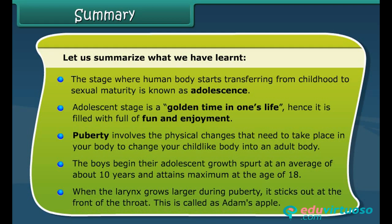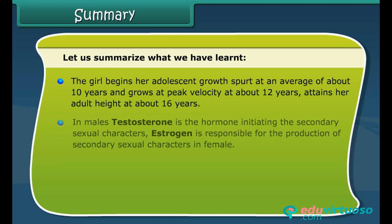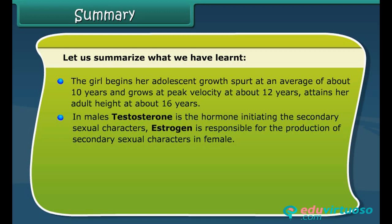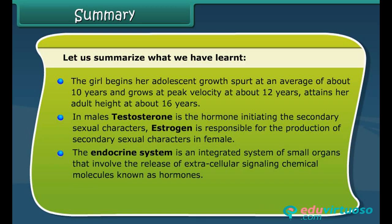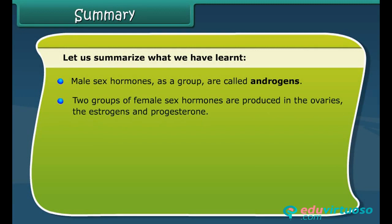The girl begins her adolescent growth spurt at an average of about 10 years and grows at peak velocity at about 12 years, attaining her adult height at about 16 years. In males, testosterone is the hormone initiating the secondary sexual characters. Estrogen is responsible for the production of secondary sexual characters in females. The endocrine system is an integrated system of small organs that involve the release of extracellular signaling chemical molecules known as hormones. The gonads — the primary reproductive organs — are the testes in the male and the ovaries in the female.